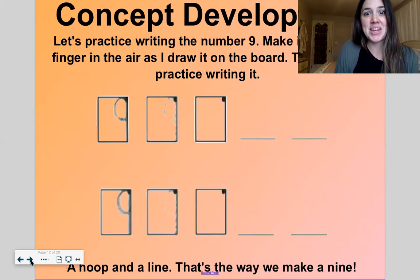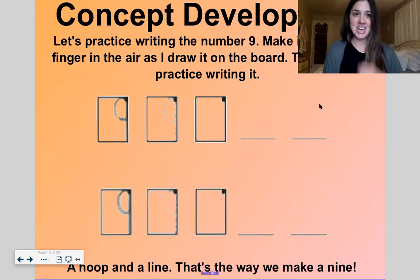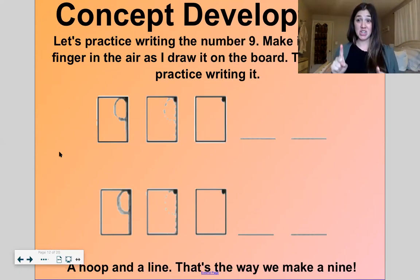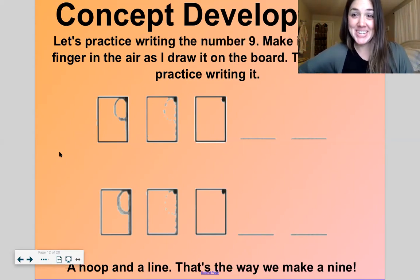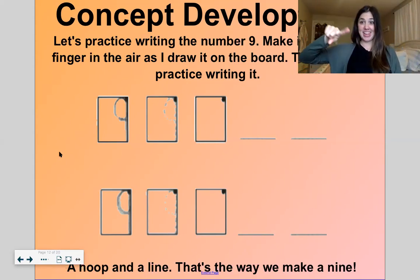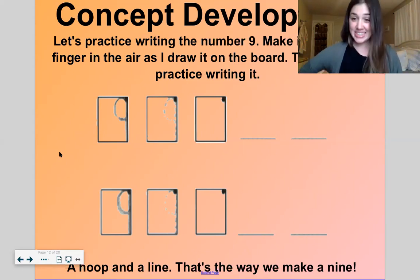All right, let's practice writing the number nine now. So let's make it with your finger in the air first. And then if you have something to write with and write on, you can do that too. A hoop and a line, that's the way we make a nine.